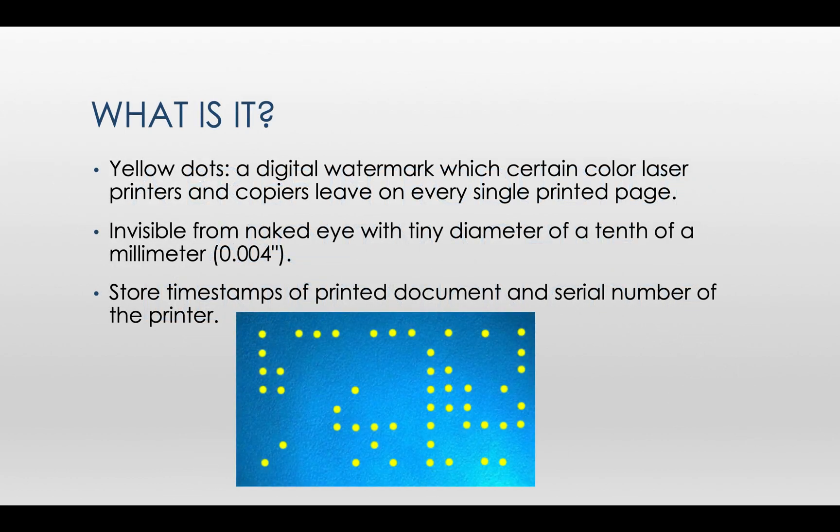First of all, what is machine identification code? It is also known as yellow dots or tracking dots. It's a digital watermark which certain color laser printers or copiers leave on every single printed page.